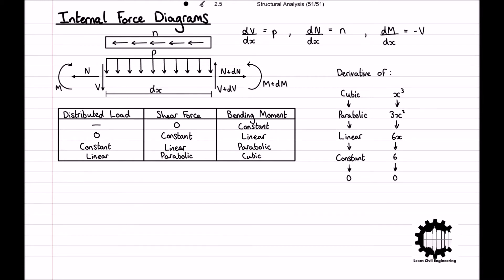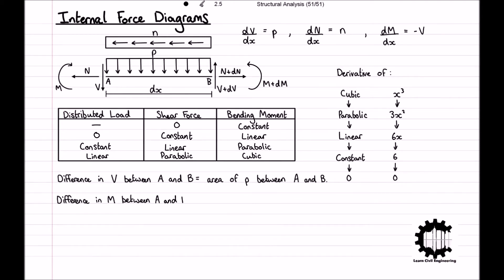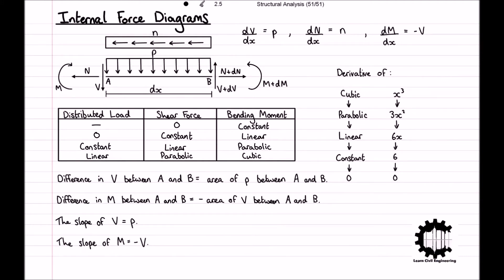For completeness, for a bar from point A to point B: the difference in V between A and B equals the area of p between A and B; the difference in M between A and B equals the negative area of V between A and B; the slope of V equals p; and the slope of M equals negative V. These are the cases for moving from left to right — if moving right to left, simply invert the signs.